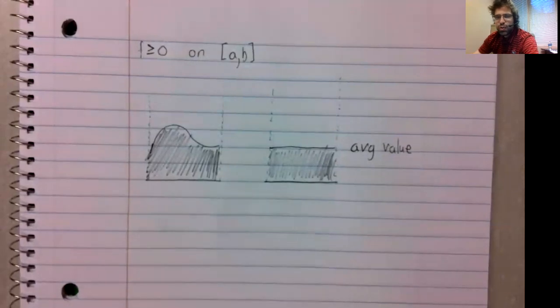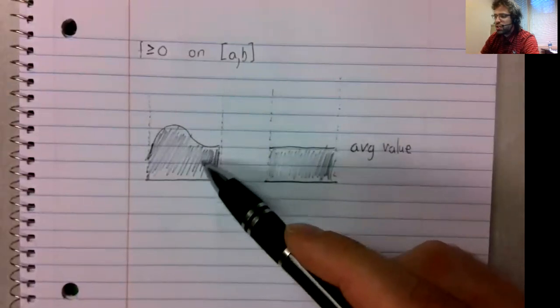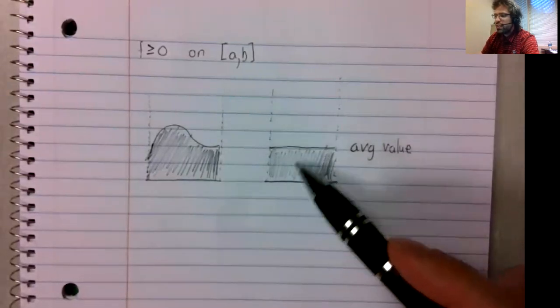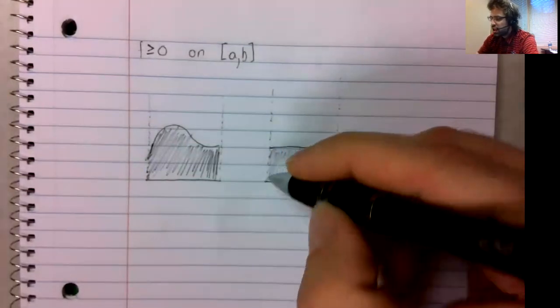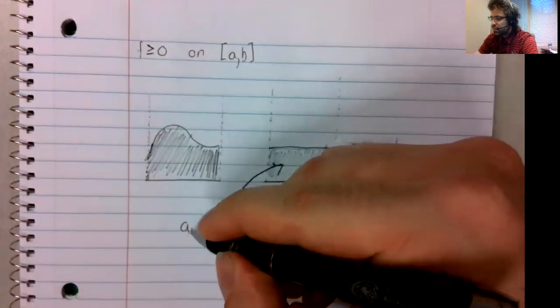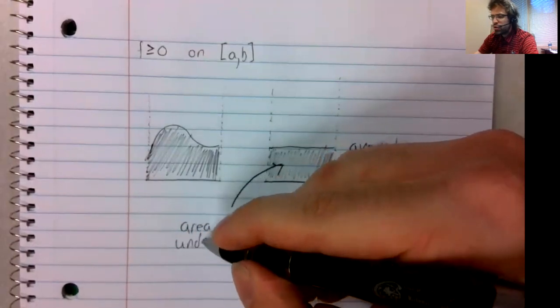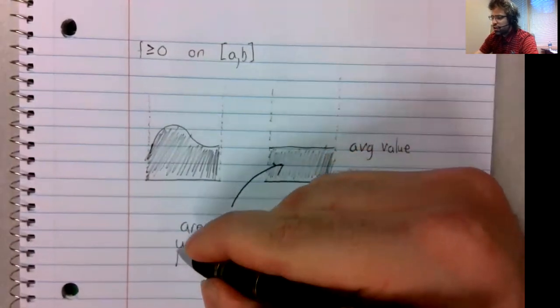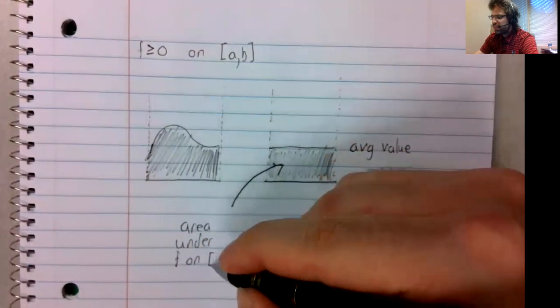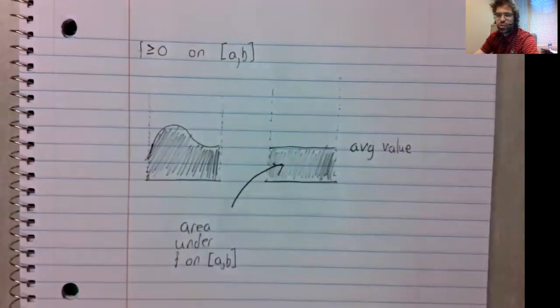Now, when we took the lid off, we didn't change the amount of water. So this shaded region and this shaded region are the same. The area under the curve on this interval.